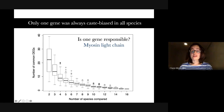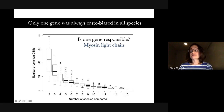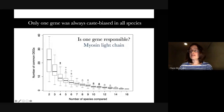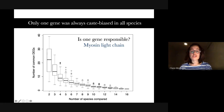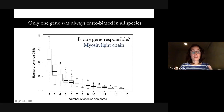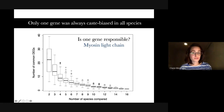That gene was myosin light chain — is it responsible for caste maintenance? I don't think so. First, because myosin light chain is a housekeeping gene that certainly has a caste-biased expression pattern due to differences in demands on muscular activity by queens and workers. Also because there are potentially many more genes that could be differentially expressed if we could have collected samples at the same time and place, and controlled environmental conditions.